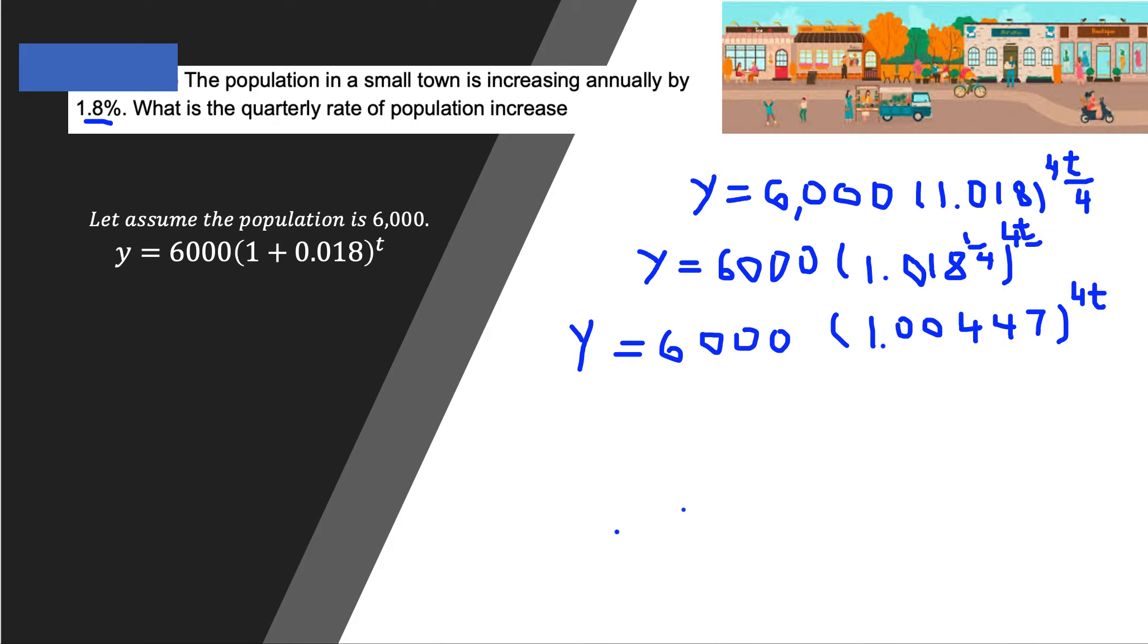This is in quarters, and now how can I find the percentage? We already know the factor b is equal to 1 plus r, so this factor here inside is equal to 1 plus r.